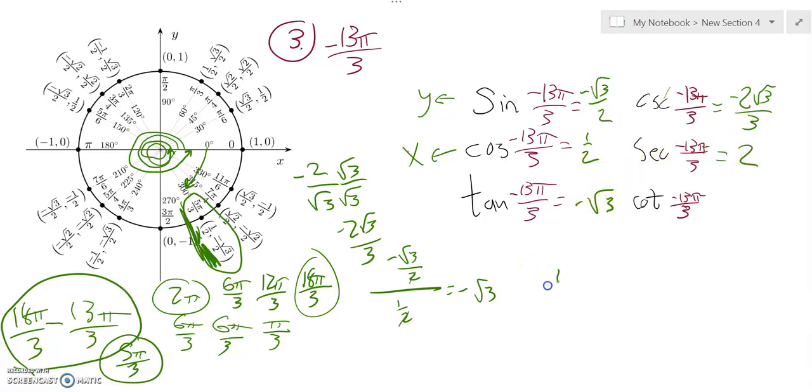And negative root 3, I take the reciprocal of that. That's negative 1 over root 3. Again, I can't leave that root 3 in the denominator. So it would be negative 1 times root 3, negative root 3 over 3. There it is.